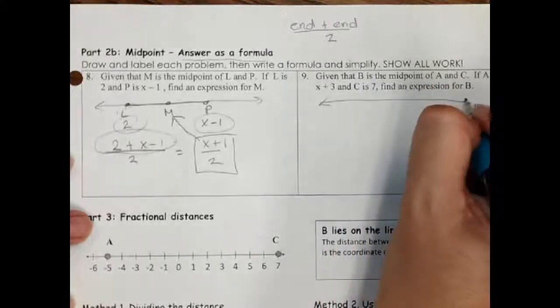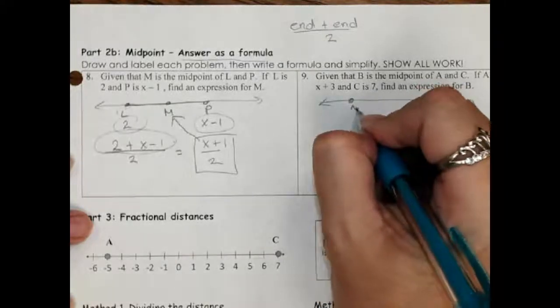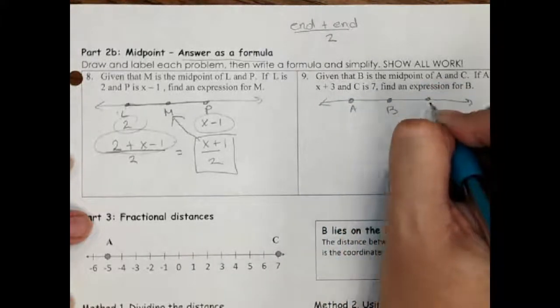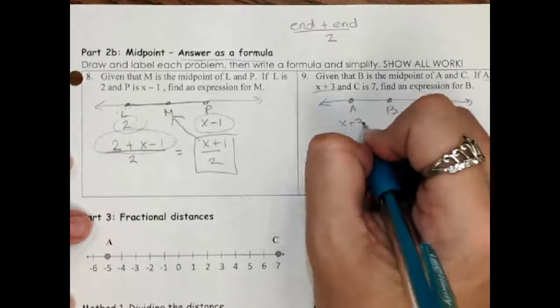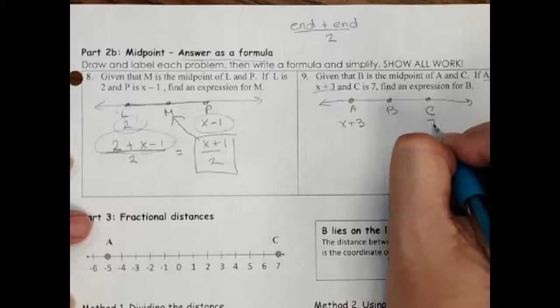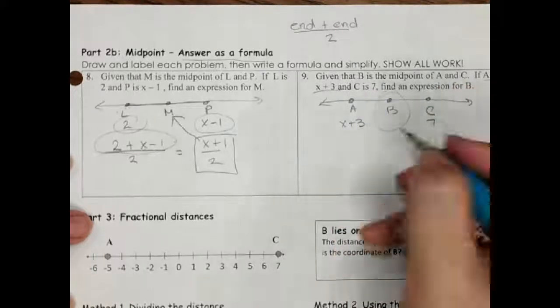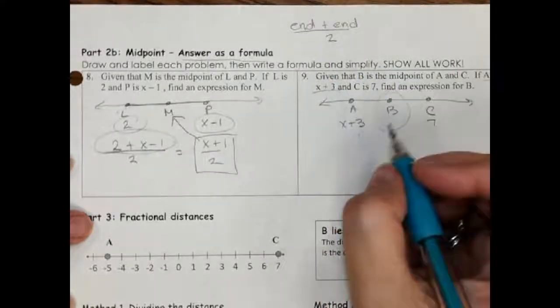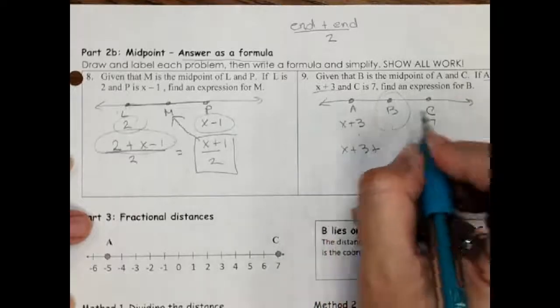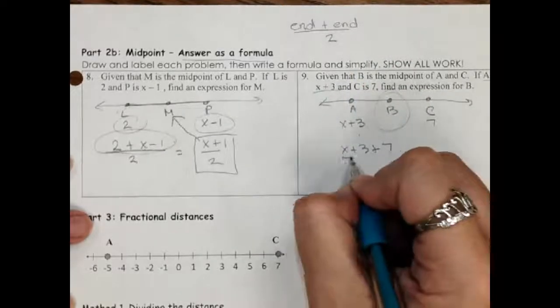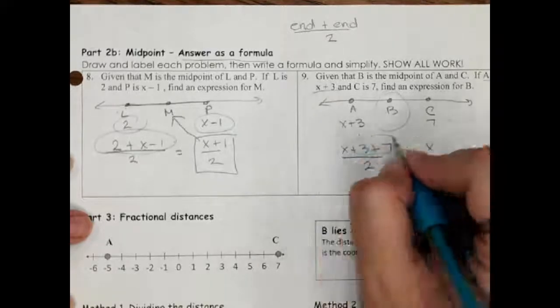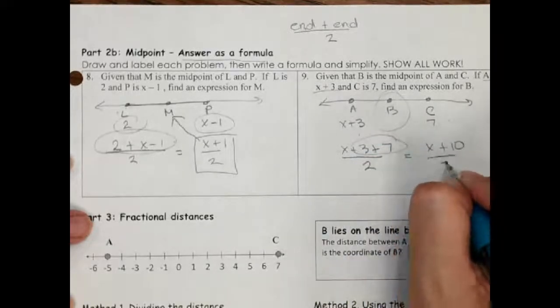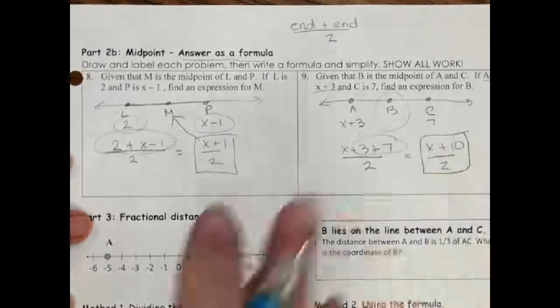So we're going to do it again. I've got A, B as the midpoint, C as the other end. If A is at x plus 3, and C is at 7, find B. So I use the same formula. One end point plus the other end point, and divide by 2. Combine like terms. That's those. And I'm done. That's all you do on that kind.